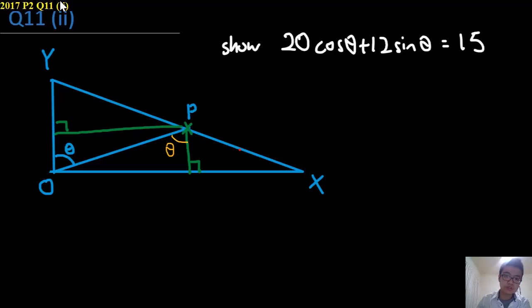Part 2 asks you to show that 20 cosine theta plus 12 sine theta equals 15, with values here being 3, and OP and OX being 5.